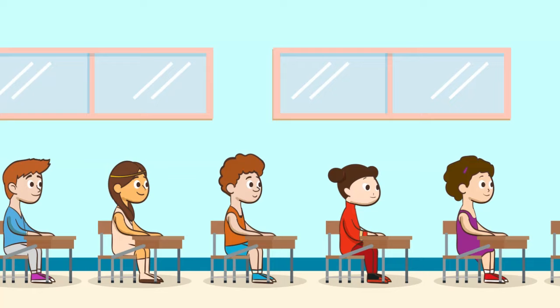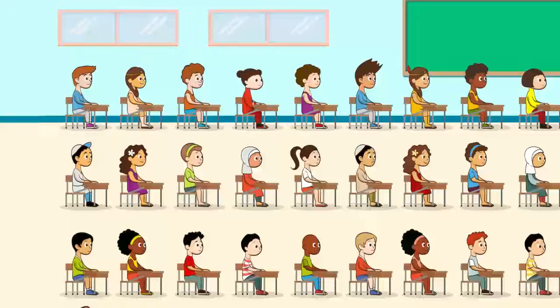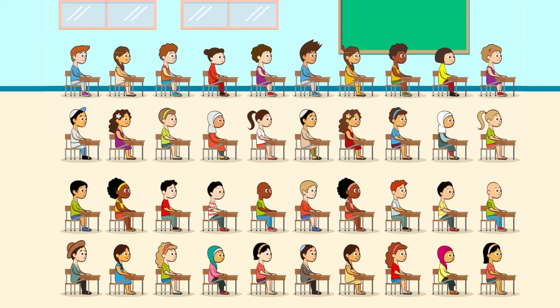Teachers often lose sight of the fact that if they have 40 students working in the classroom, they're working with 40 individuals. And each of those 40 is unique and special, with their own talents and with their own learning needs, and with the potential to be successful and happy if permitted and helped to be so.